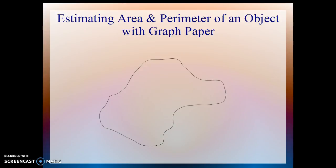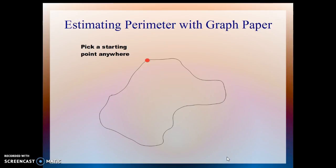It's possible and not very difficult to estimate the area and perimeter of an irregular object with graph paper, and we have a really irregular object here in front of you. To estimate the perimeter, first of all you have to choose a starting point on the perimeter of the object, and we've done that here at the top left.